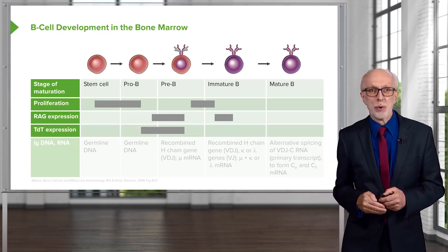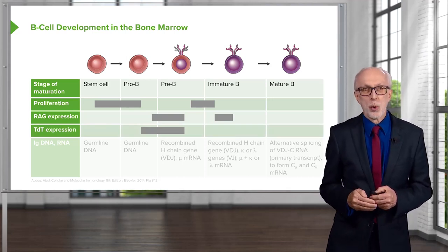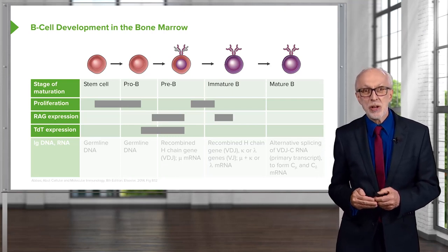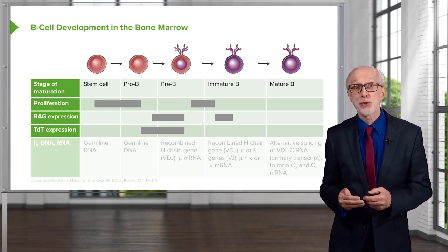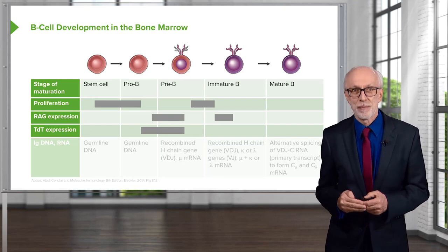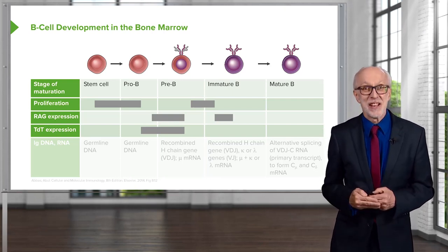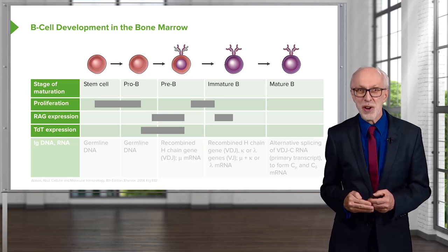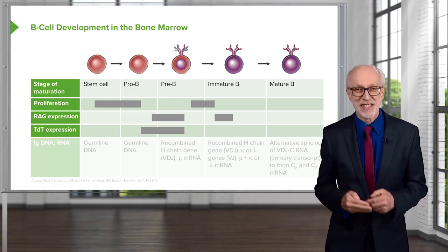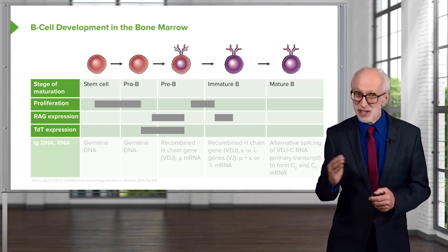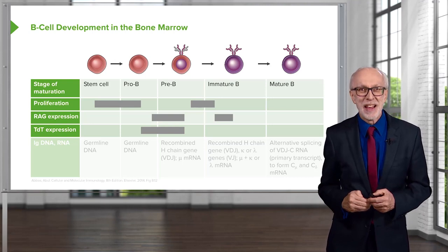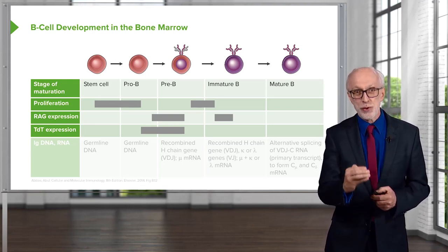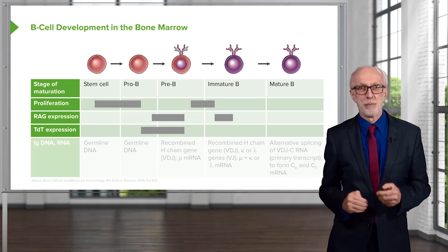There's another molecule called TDT — terminal deoxynucleotidyl transferase. We normally just refer to it as TDT. And that's expressed at the stage between pro-B cells and pre-B cells.